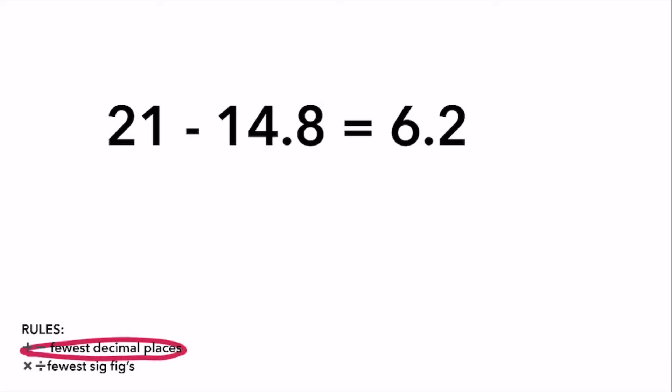21 minus 14.8. The unrounded answer is 6.2. Since we're subtracting, we have to round our answer to the same number of decimal places as the least precise measurement, which is 21, with no decimal places.